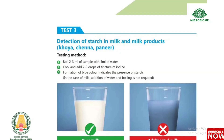Test 3: Detection of starch in milk and milk products - khoya, chenna, paneer. Testing method: boil 2 to 3 ml of sample with 5 ml of water, cool, and add 2 to 3 drops of tincture of iodine. Formation of blue color indicates the presence of starch. In the case of milk, addition of water and boiling is not required.